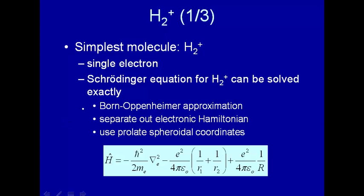With the Born-Oppenheimer approximation, you separate out the energy of the nuclei, and so you just have an electronic Hamiltonian, the Hamiltonian for just that one electron.